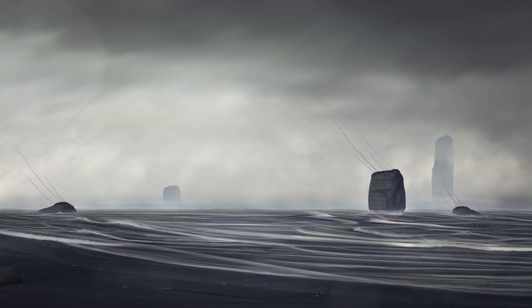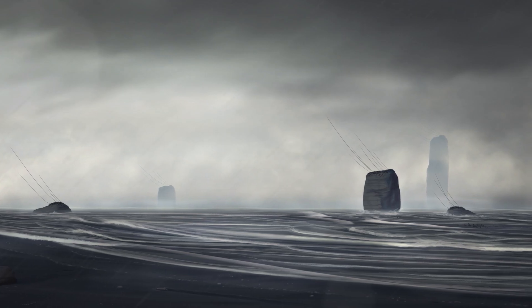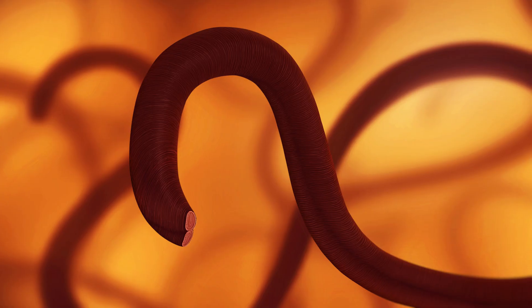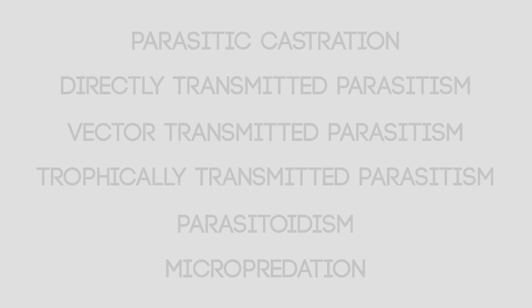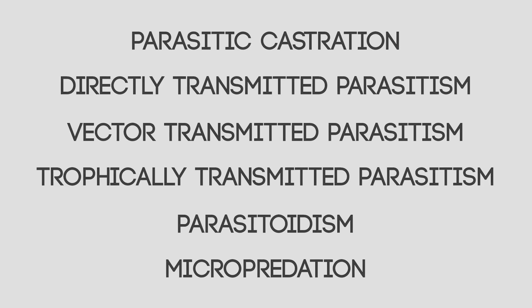In the previous episode of the Isla Project, we discussed the definition of parasitism, as well as the characteristics that describe most parasites. We looked at three of the six parasitic exploitation strategies and illustrated them using model organisms from the planet Isla. In part two, we will look at the remaining three strategies: trophically transmitted parasitism, parasitoidism, and micro-predation.